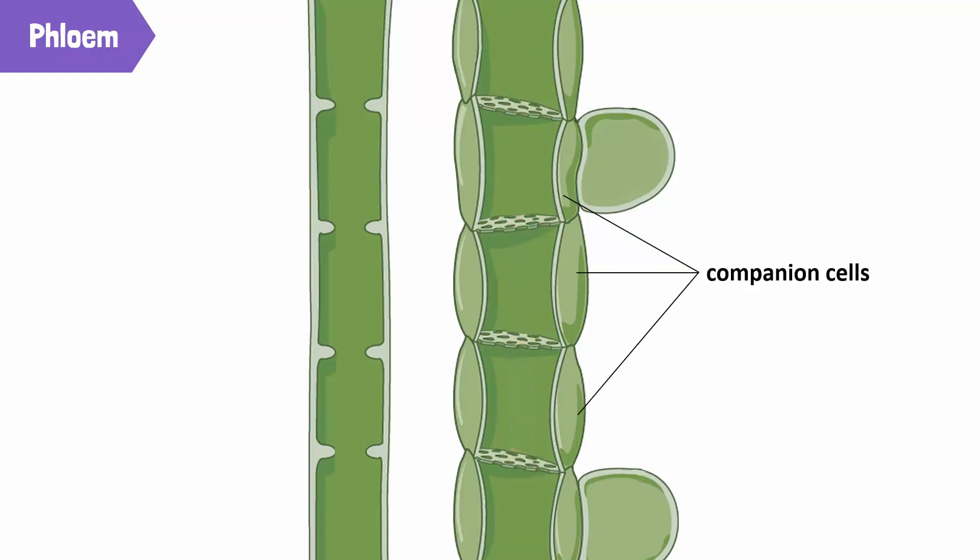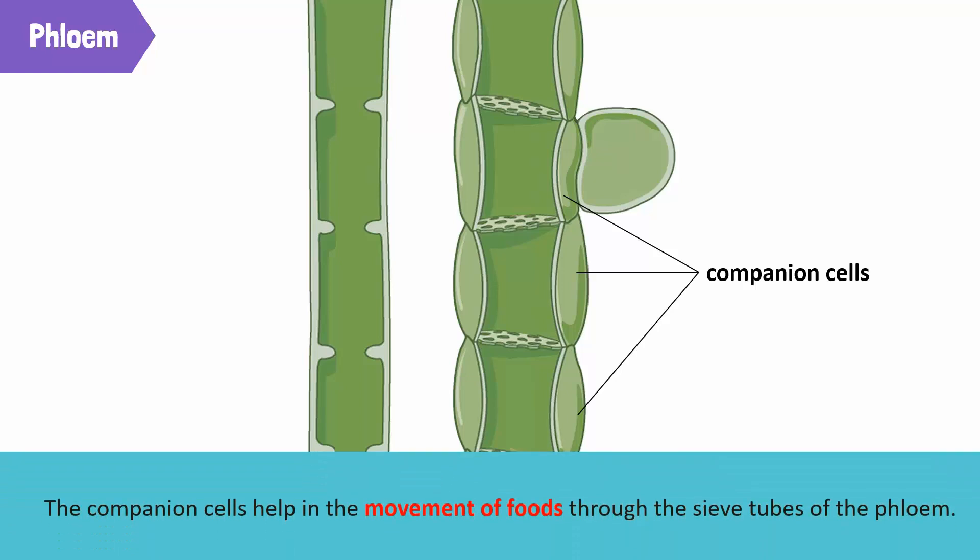Phloem tissues also have cells called companion cells because they grow by the side of the sieve tubes. The companion cells help in the movement of foods through the sieve tubes of the phloem.